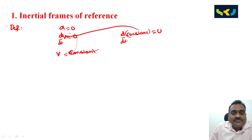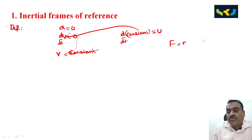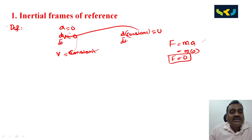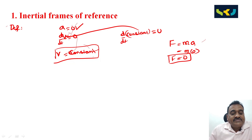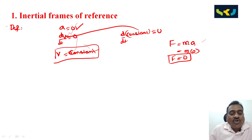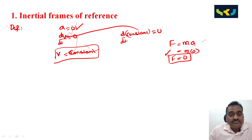In these frames of reference, Newton's laws are valid. They are non-accelerated frames, meaning acceleration is zero. The force F equals ma; if a is zero, then force equals zero — no external force acts on the body. Such a constant velocity frame of reference is called an inertial frame of reference. In this frame, a body not acted upon by an external force remains in its state of rest or uniform motion — Newton's first law.